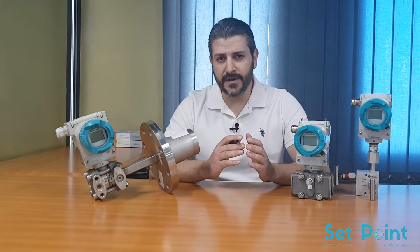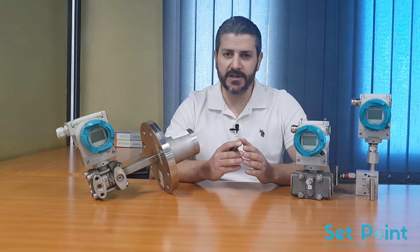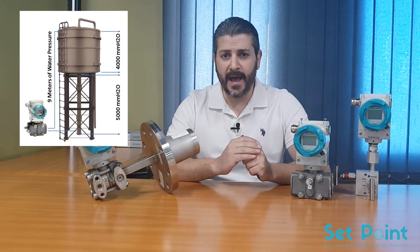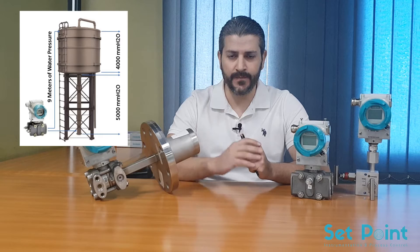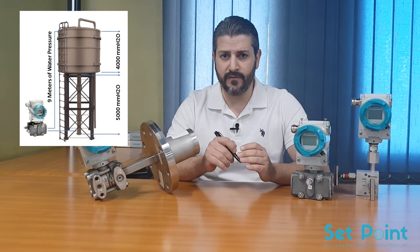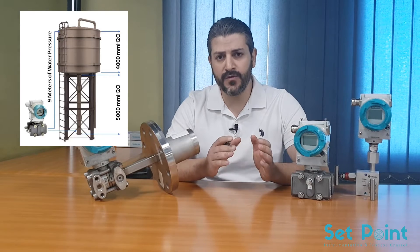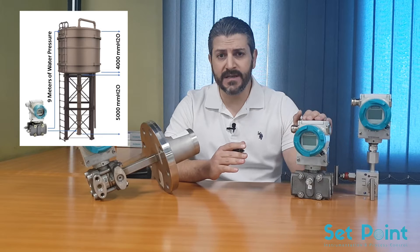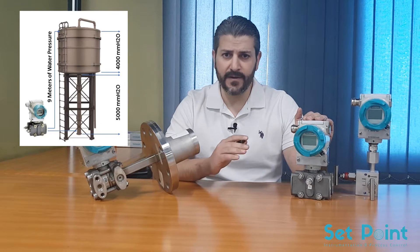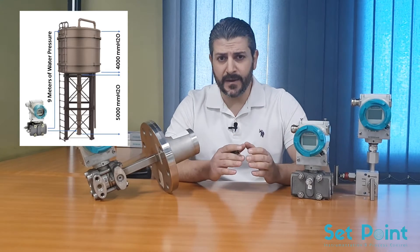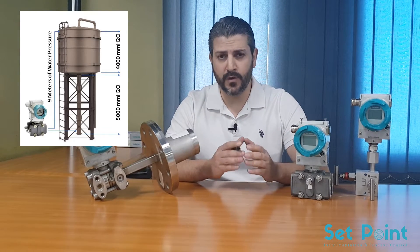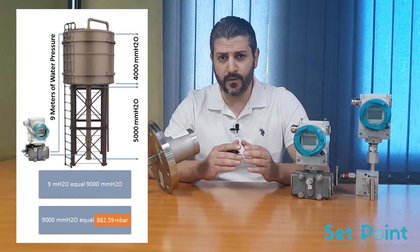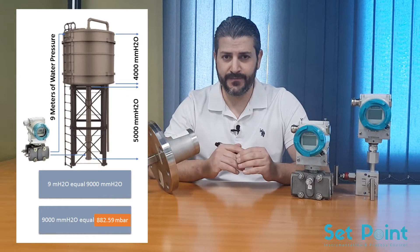In this tutorial we will have a water tower as an application example. Let's assume we have a 5-meter standpipe and the tank itself is 4 meters high. We need only to focus on 0 to 4 meters inside the tank and we don't really care about the standpipe. We will install the C-Trans P at the bottom of the standpipe at the ground. The first thing we should do is determine the maximum working pressure. Since we are 9 meters above the ground, the maximum working pressure will be 9 meters of water pressure.